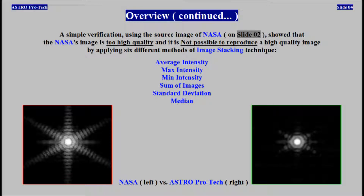A simple verification using the source image of NASA on slide 2 showed that NASA's image is too high quality and it is not possible to reproduce a high quality image by applying six different methods of image stacking technique: average intensity, max intensity, minimum intensity, sum of images, standard deviation, and median.